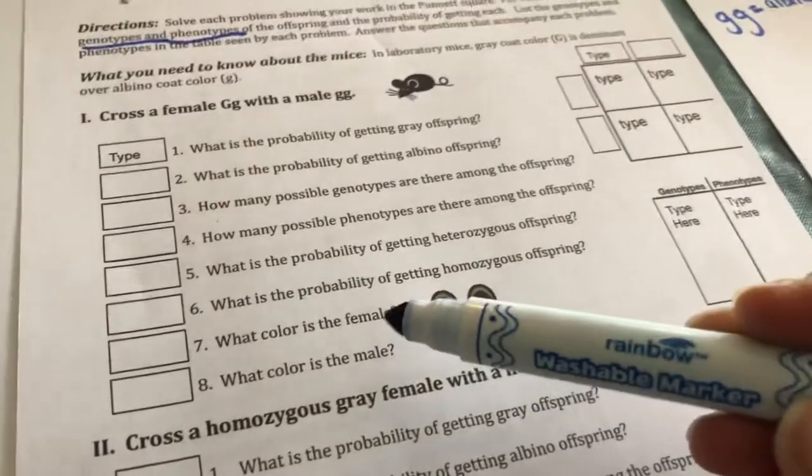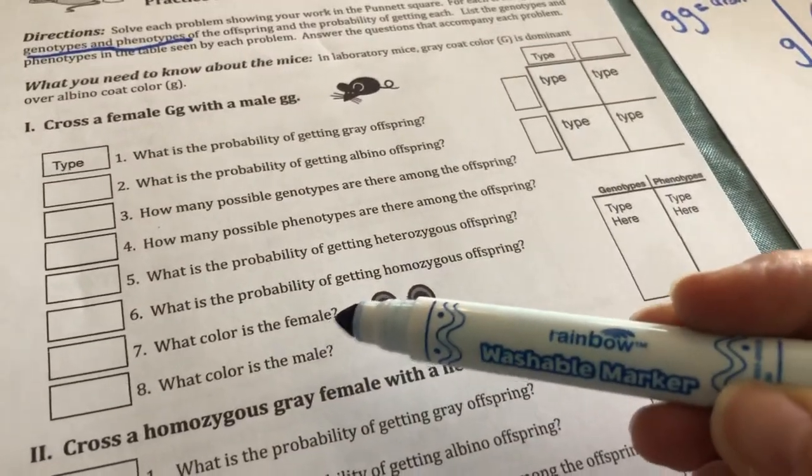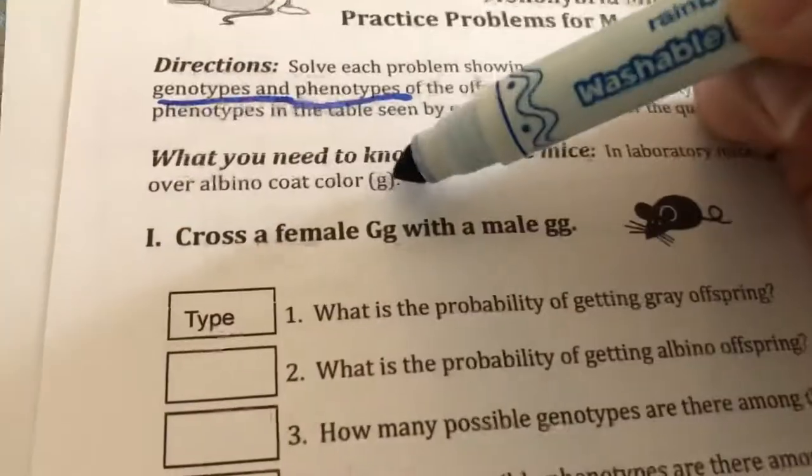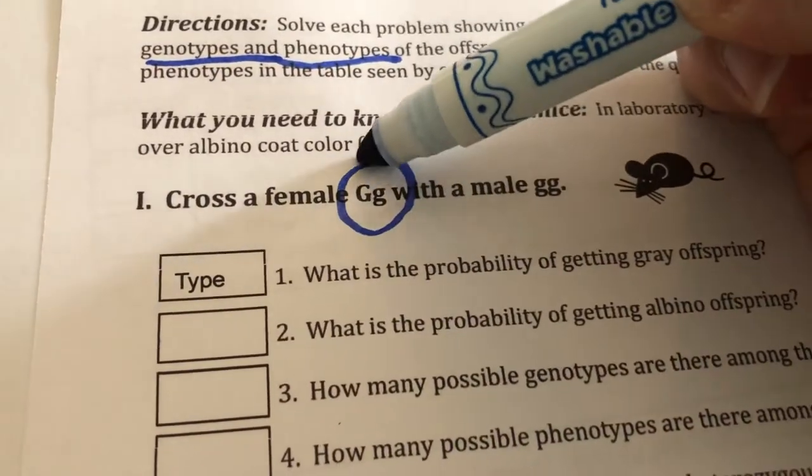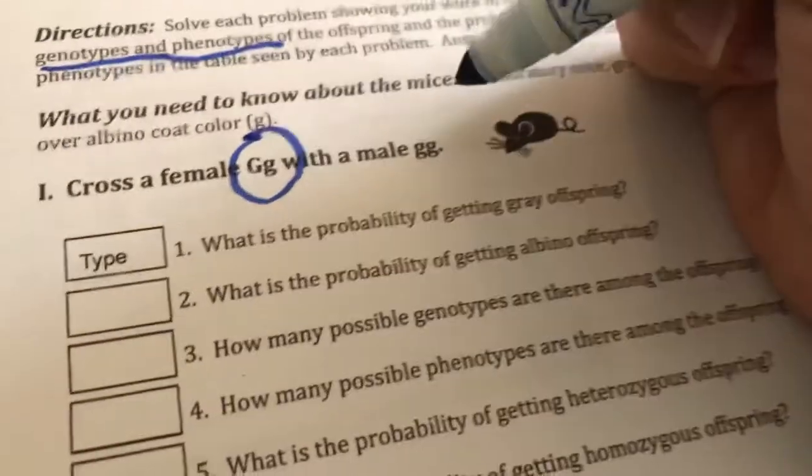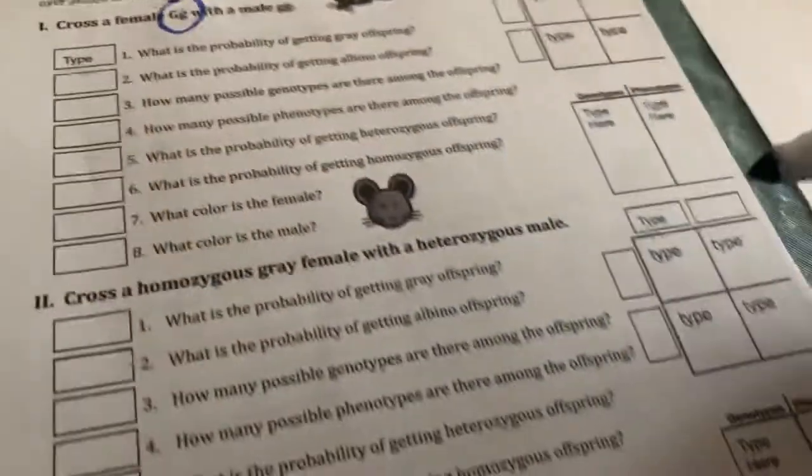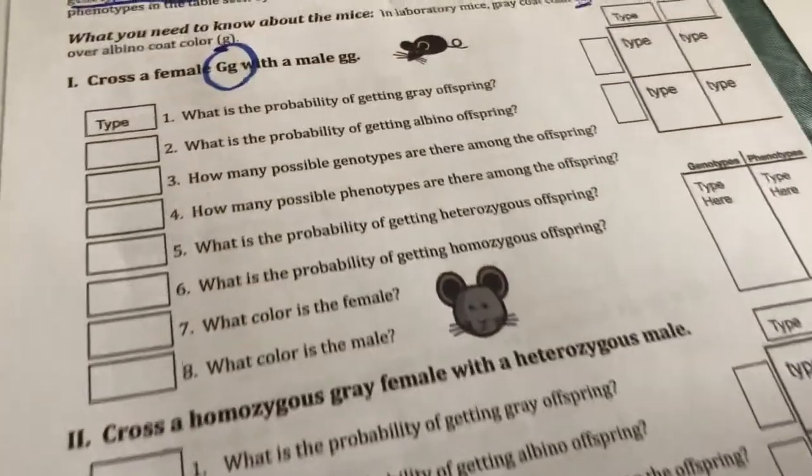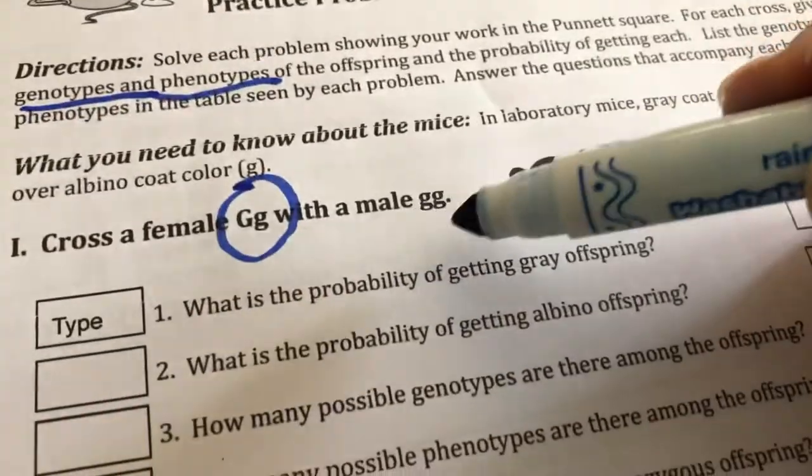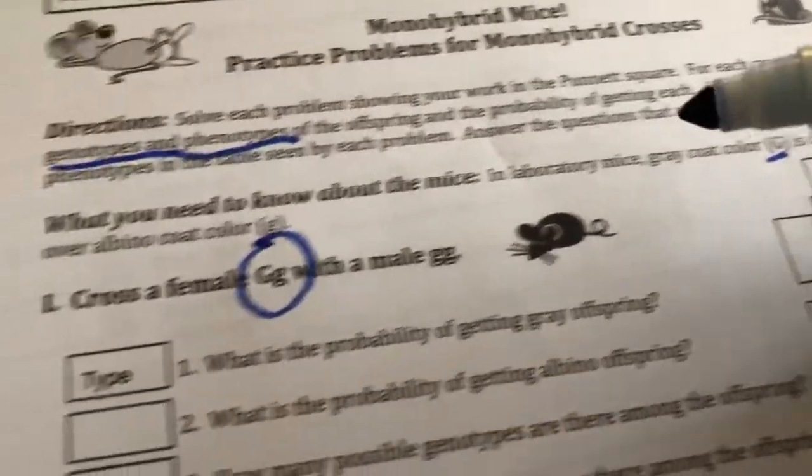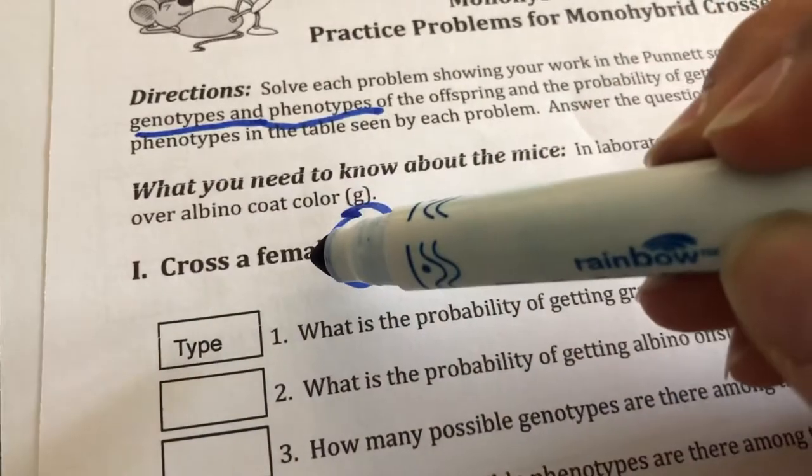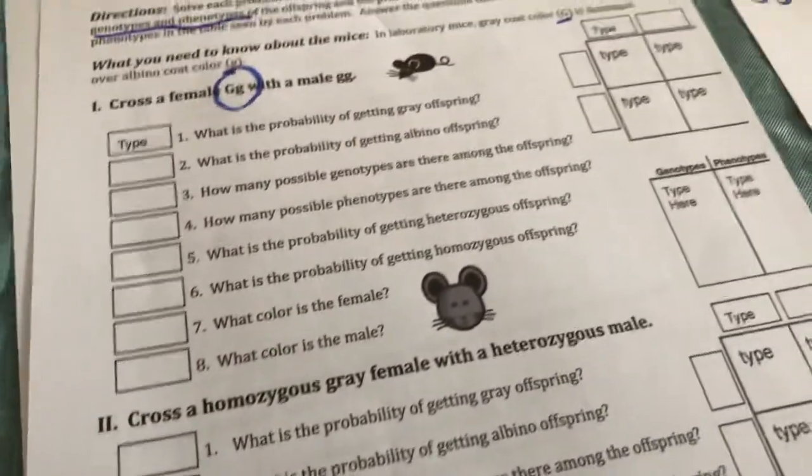What color is the female mouse? When you look up here, the female is capital lowercase. And you know that capital G is gray. So she's gray. And the male, the male is lowercase, lowercase g. And lowercase, lowercase is albino. So he is albino.